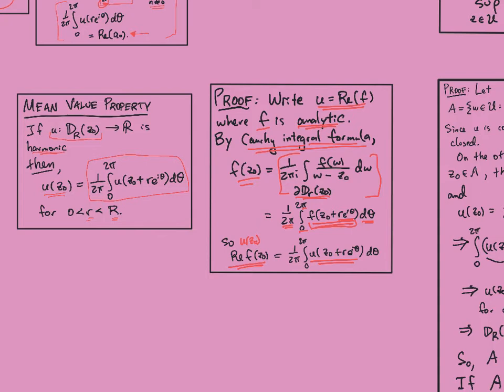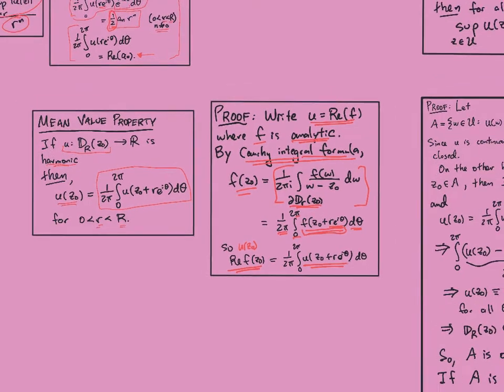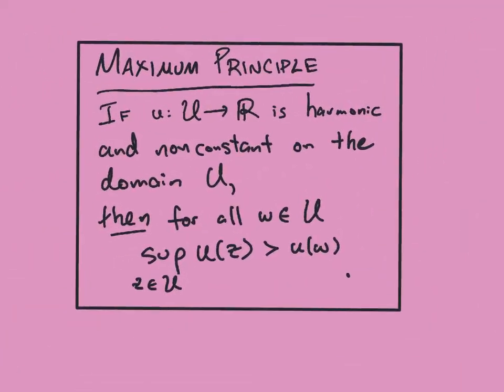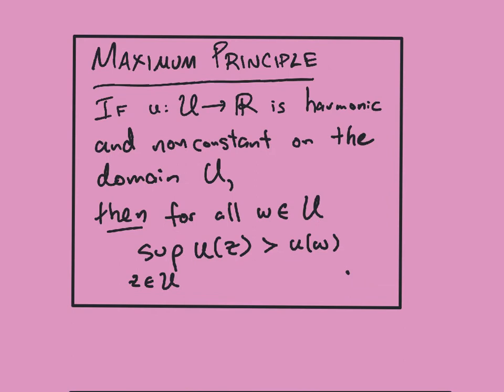Now the mean value property can actually be used to define harmonic functions only starting with a continuity assumption, and we'll prove that later. It can also be used to prove an important property of harmonic functions called the maximum principle. If I have a harmonic function on a domain U, and if it's non-constant, then it can never attain its maximum over the set U. So the supremum over the set U will always be greater than its value at any specific point.